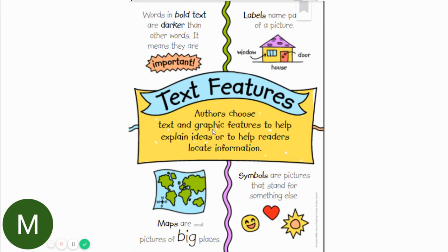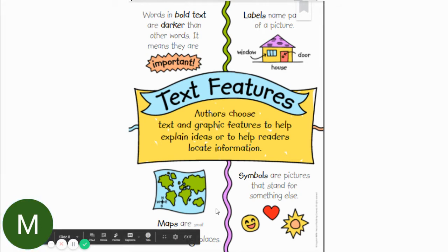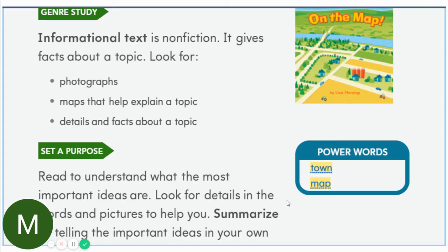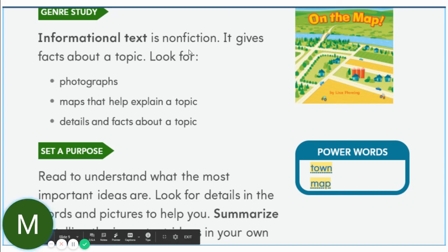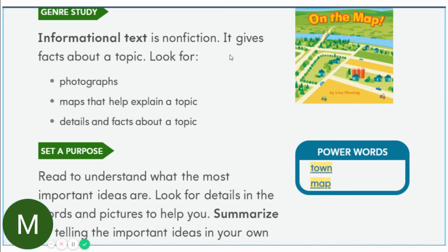Authors choose text and graphic features to help explain ideas or to help readers locate information. Maps are pictures of big places. Symbols are pictures that stand for something else. Again, this is an informational text, which means it's non-fiction. It's teaching you — the author wrote it to teach you. It gives facts about a topic.